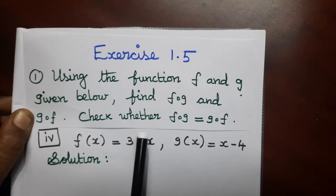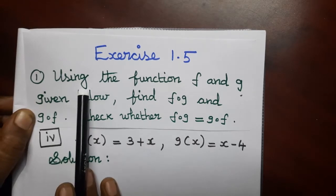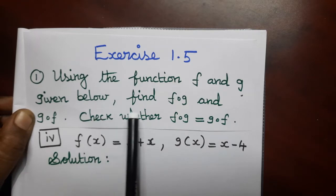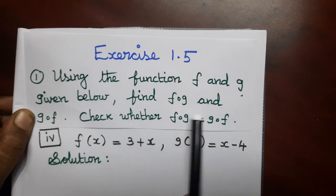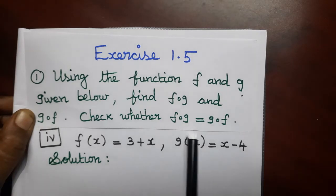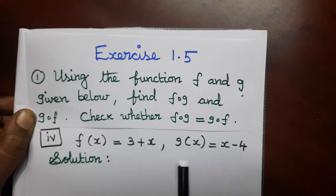Exercise 1.5, first sum, fourth part. Using the function f and g given below, find f dot g and g dot f. Check whether f dot g equal to g dot f. Fourth part: f of x equal to 3 plus x and g of x equal to x minus 4.